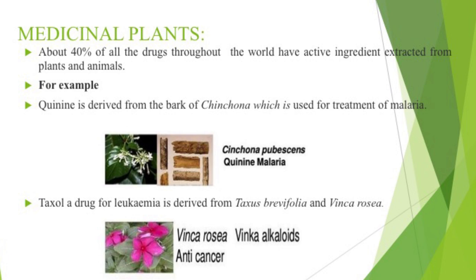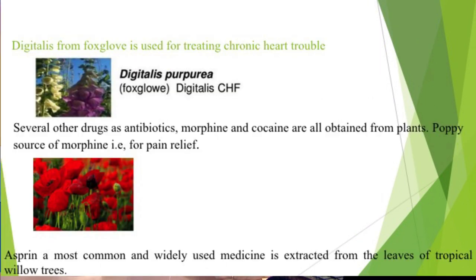Medicinal plants: about 40% of all drugs throughout the world have active ingredients extracted from plants and animals. For example, quinine is derived from the bark of cinchona and is used for the treatment of malaria. Taxol, a drug for leukemia, is derived from Taxus brevifolia. Digitalis from foxglove is used for treating chronic heart trouble. Several other drugs — antibiotics, morphine and cocaine — are all obtained from plants. Aspirin, the most widely used medicine, is extracted from the leaves of tropical willow trees.